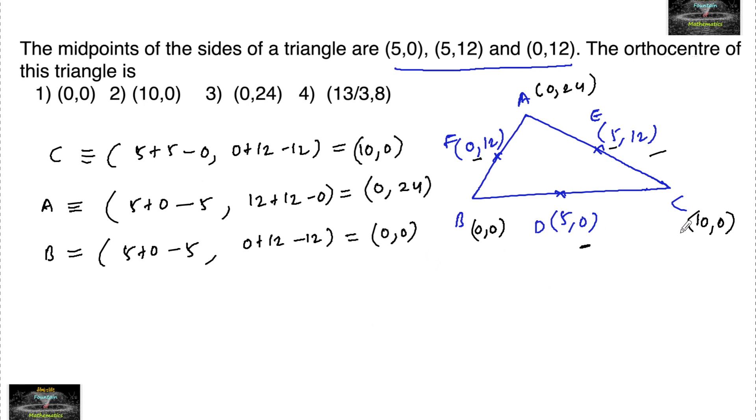So we got the vertices of ABC as (0,0), (10,0), and (0,24). Clearly we can observe that this is also a right angle triangle. (0,0), (10,0), and (0,24), so it is a right angle triangle.